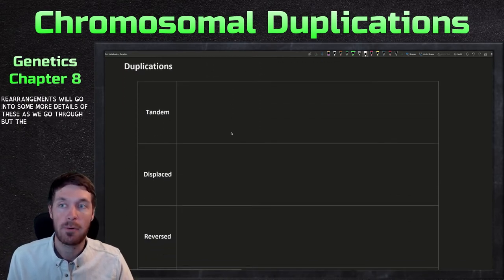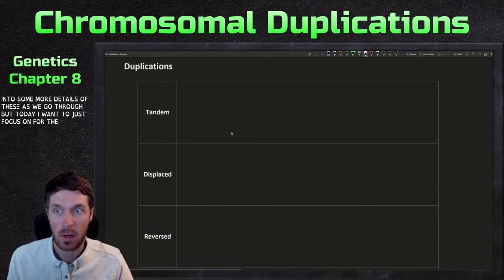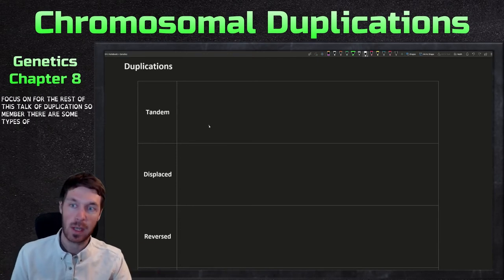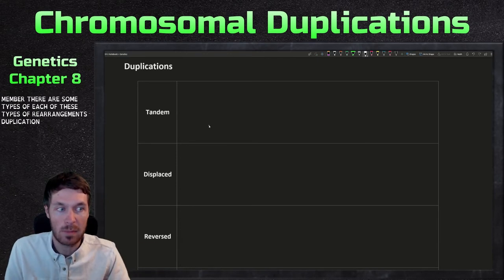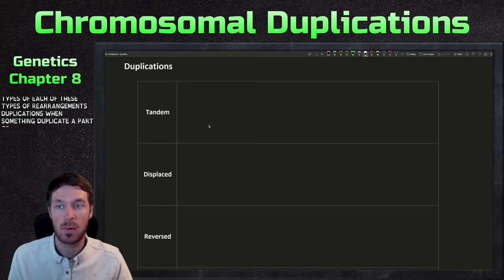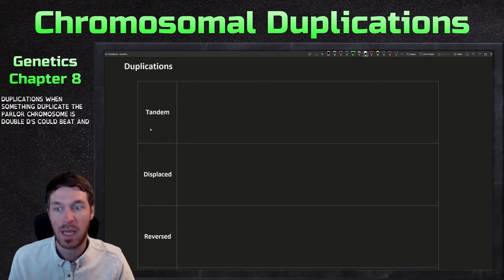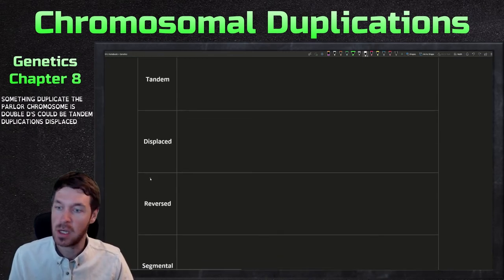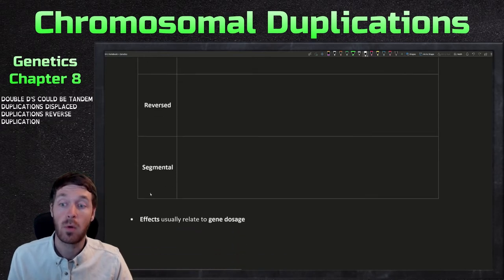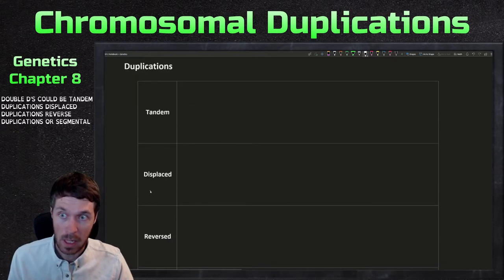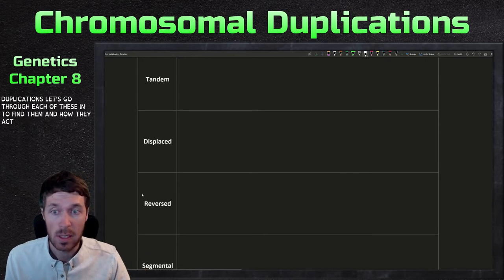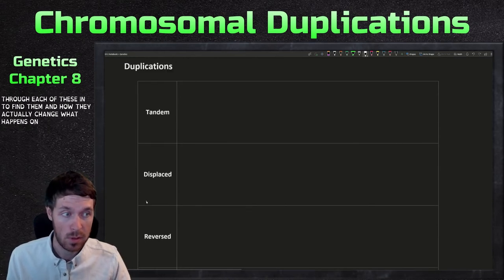So that's just a little introduction to rearrangements. We'll go into some more details of these as we go through. But today I want to just focus on for the rest of this talk, duplication. So remember there are subtypes of each of these types of rearrangements. Duplications is when something duplicates. A part of the chromosome is doubled. These could be tandem duplications, displaced duplications, reverse duplications, or segmental duplications. So let's go through each of these and define them and how they actually change what happens on the chromosome.